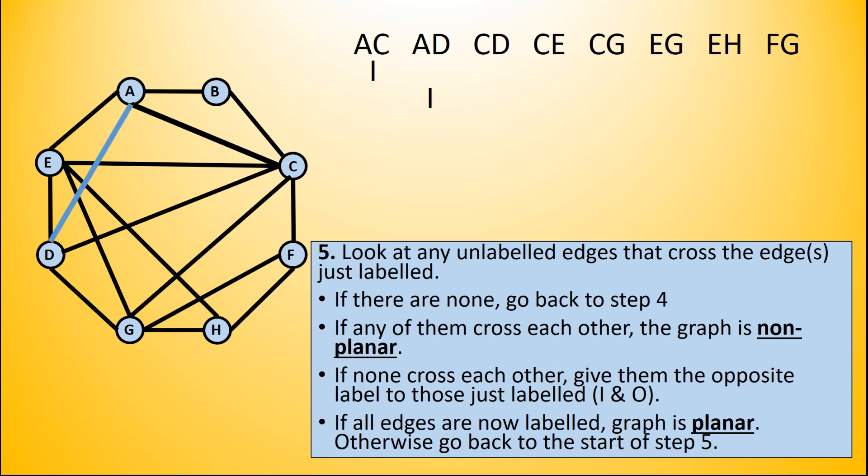We go back and find another edge. I've chosen AD. Now I've put it on a separate line so I can keep track of which ones have just been labeled. We look at all of the edges that cross that line - there are three in this case. We notice that they do not cross each other, so we give them the opposite label to the one just labeled. So it was I, we're going to label those three with an O.